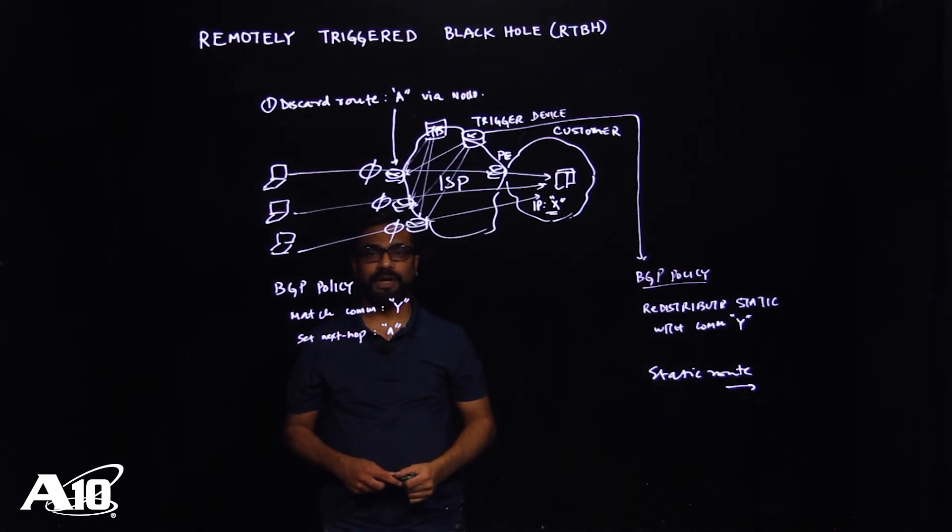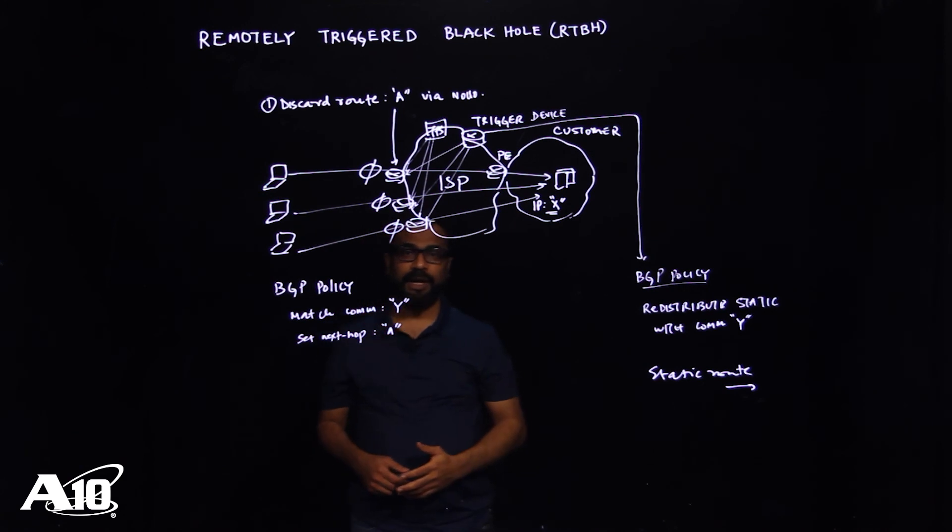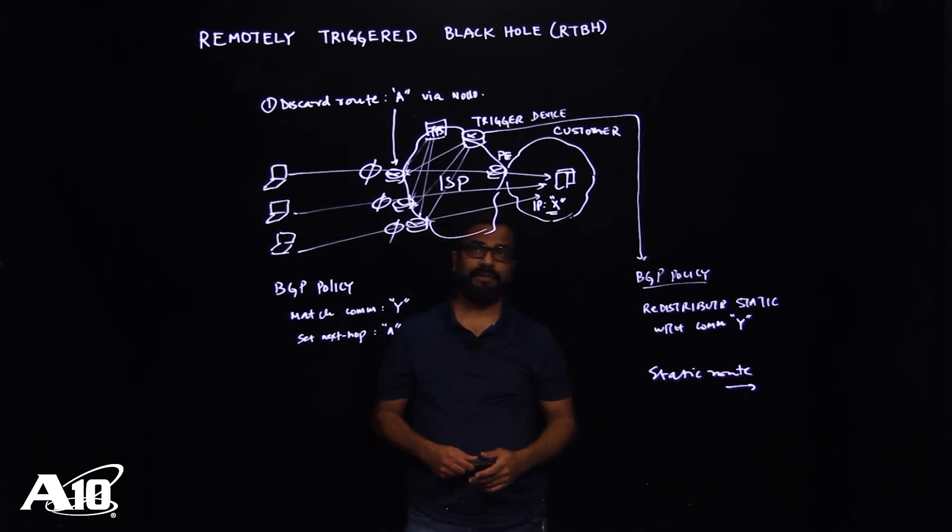And whenever a certain entity is under attack and if the action is to black hole the traffic, we can simply, you know, in an autonomous fashion, advertise a BGP update with a certain community that this device is actually looking for. And that's how the traffic will get blocked.